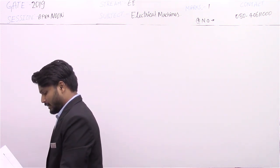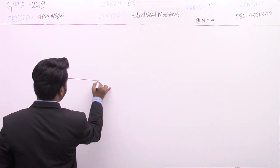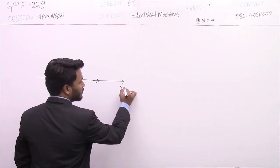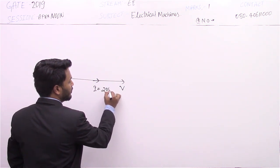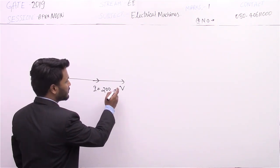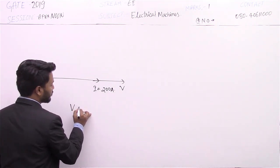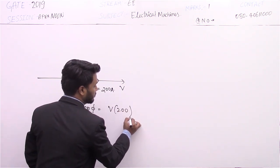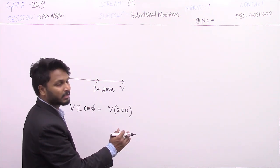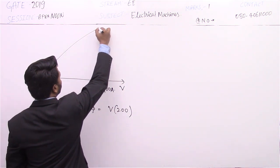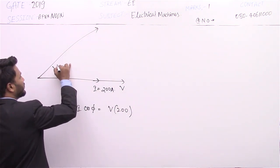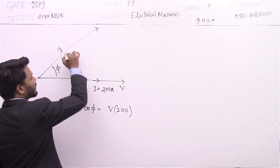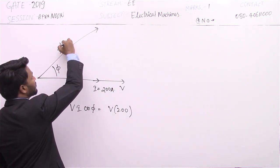It was said that line current is 200 amperes at UPF. UPF means unity power factor — voltage and current are in phase, and the current magnitude is 200 amperes. Therefore, the load is V times I, and since cos phi equals 1, load equals V into 200.